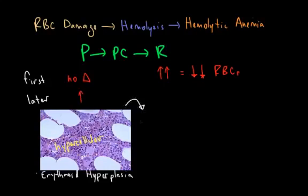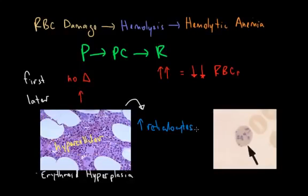Additionally, because there are so many RBC precursors, the number of reticulocytes, the immature stage of RBCs that normally make up just 1% of the circulating RBCs, increases as well. Since these escape into peripheral circulation, we see this clinically as an increase in reticulocytes, or to use our new terminology, reticulocytosis.